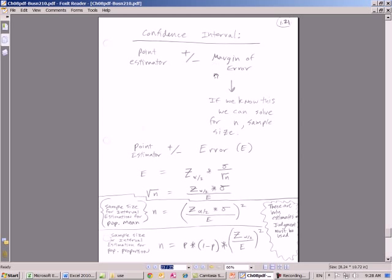The thing is, if we know this, meaning the margin of error, we can solve for n. So here's rewritten: point estimator plus or minus, we'll just say e for error.